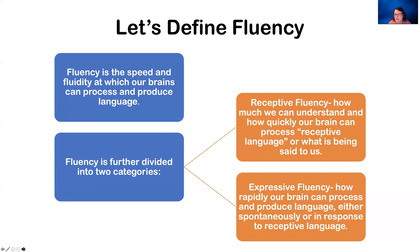Expressive fluency doesn't come until much later. Expressive fluency is formulating words in the brain in response to some kind of outside stimuli — for example, a conversation, being asked a question, or being able to write an essay. That's all expressive.